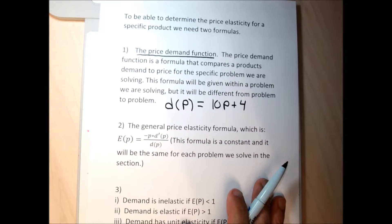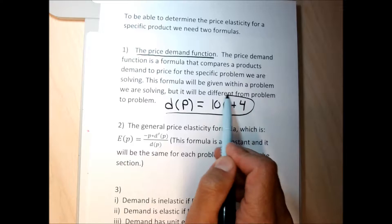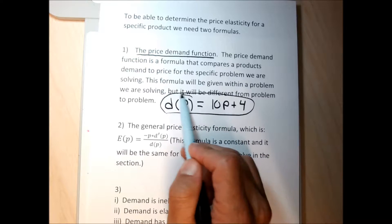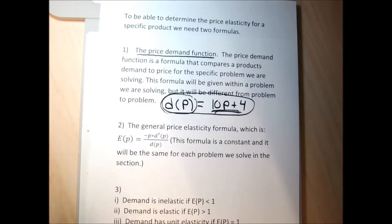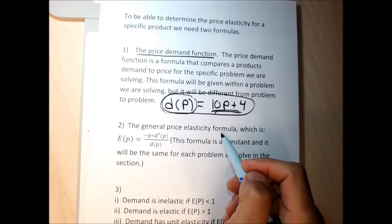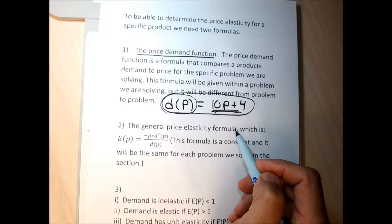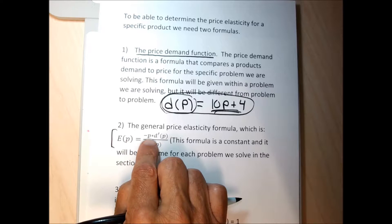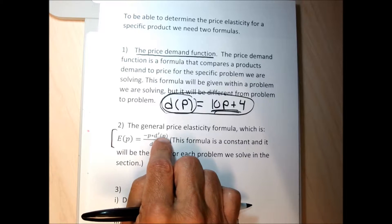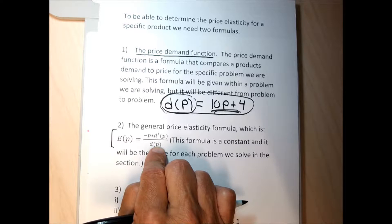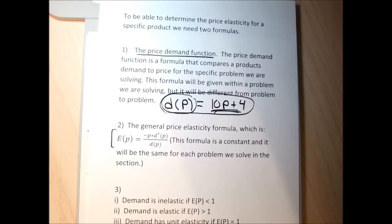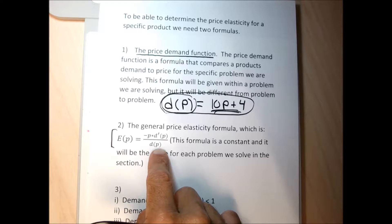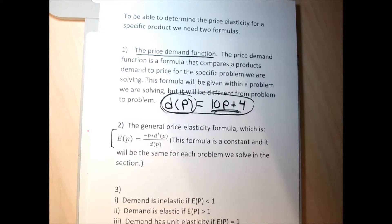That's one formula we're going to need — it'll be given in every problem, but the right side will be tailored to each specific problem. The second formula is the price elasticity formula, and it's constant: price elasticity E(P) equals negative P times the derivative of the price demand function, divided by the price demand function. This formula stays the same every problem; only the price demand function changes.